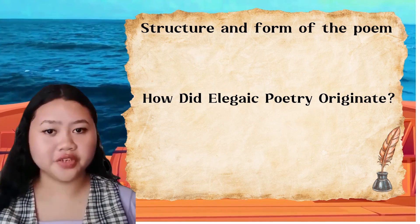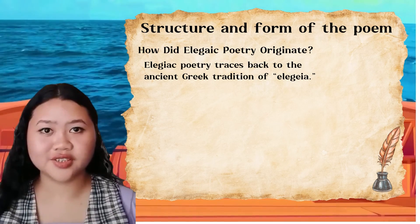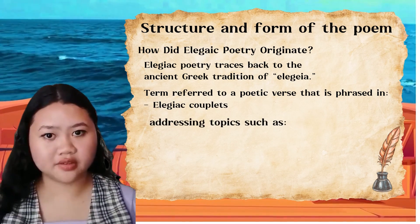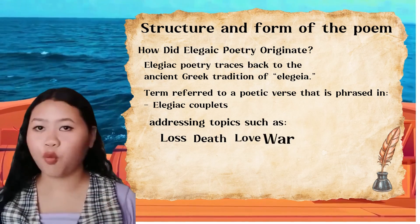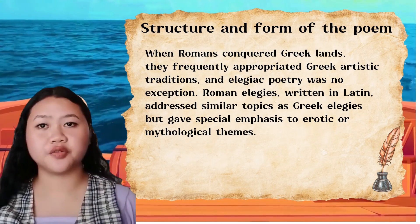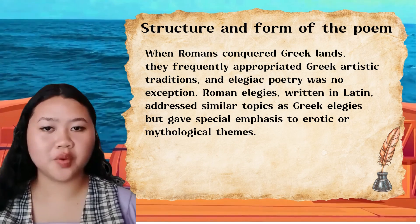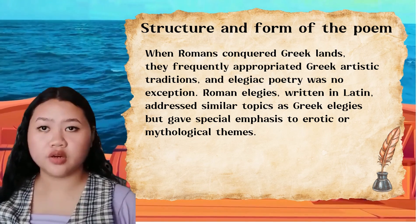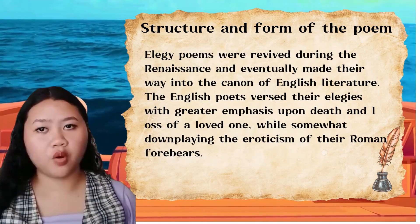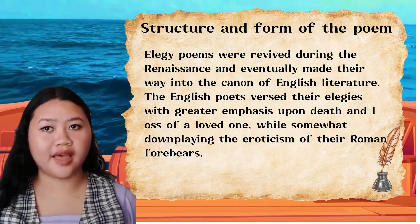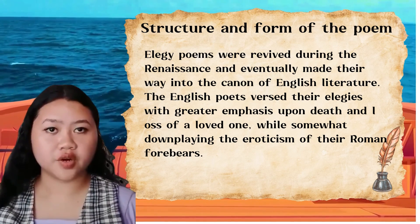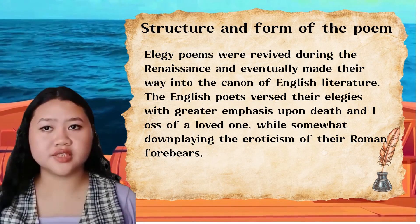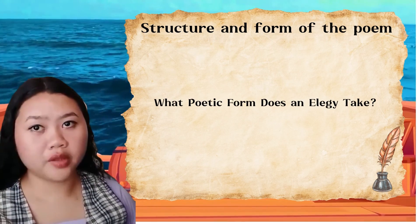Elegiac poetry traces back to the ancient Greek traditions of elegia — a poetic verse addressing topics such as loss, death, love, and war. When Romans conquered the Greek clans, they frequently appropriated Greek artistic traditions, and elegiac poetry was no exception. Roman elegies written in Latin addressed similar topics as Greek elegies but gave special emphasis to erotic or mythological themes. Elegiac poems were revived during the Renaissance and eventually made their way into English literature.